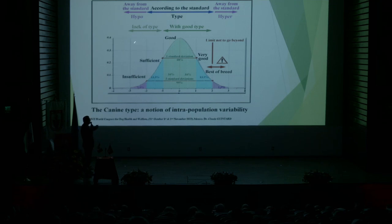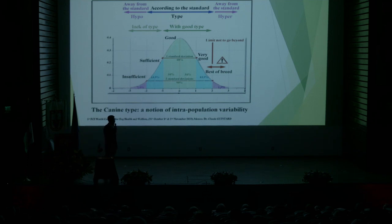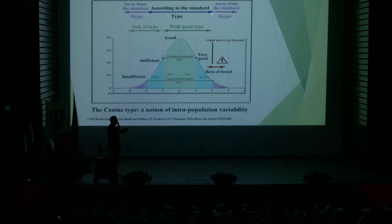But those who are in this part of the graphic have lack of type. And what is very important is to see that the pink part of this graphic corresponds to hypotype on one side and hypertype on the other. The difficulty is to know exactly where is this boundary — this limit between the best of the breed and the hypertype. This limit is not imposed by the standard. It is a limit not to be crossed, but it's up to you to know where it is.